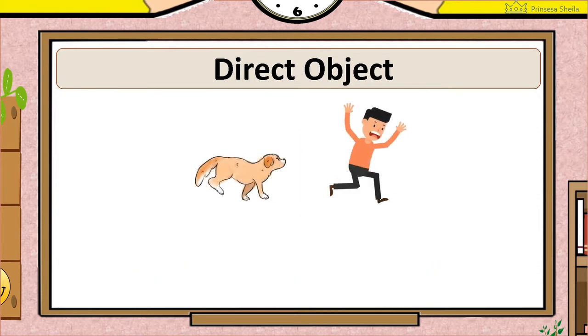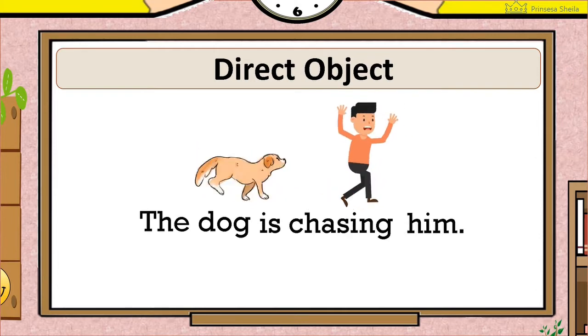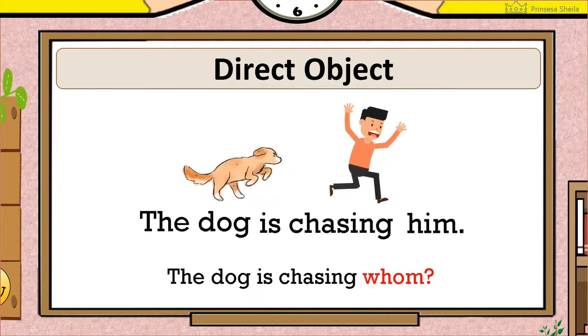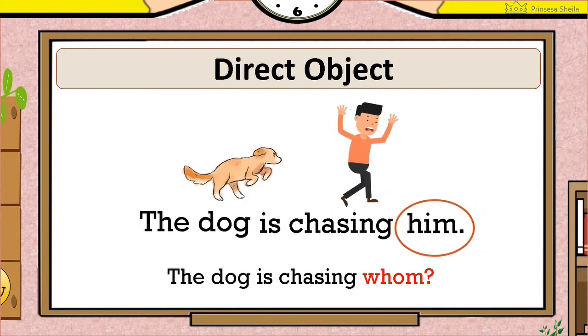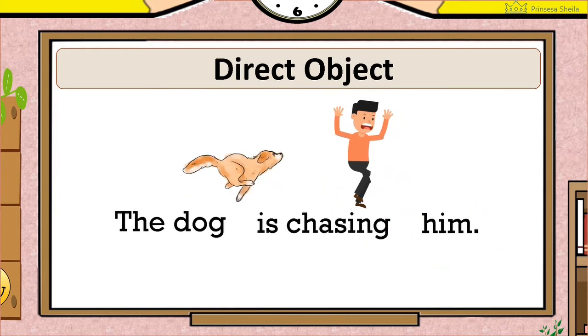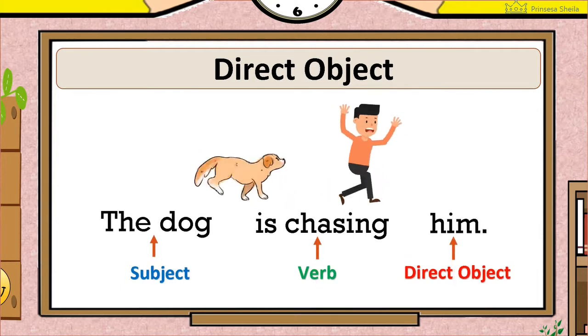Another example. The dog is chasing him. The dog is chasing whom? Him. So the dog is the subject. Is chasing is the action or verb. Him is the direct object.